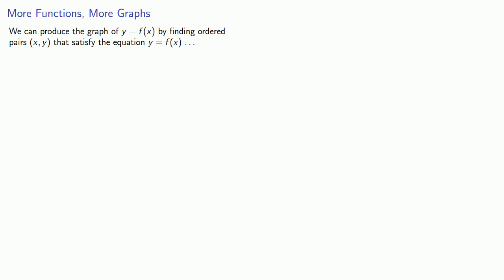We can produce the graph of y equals f of x by finding ordered pairs x, y that satisfy the equation y equals f of x if we have that equation. But what if we don't?